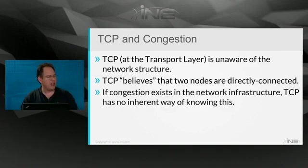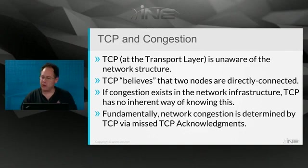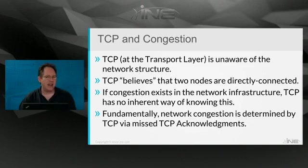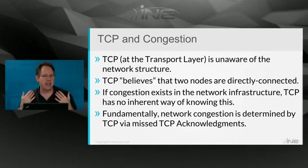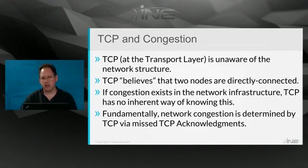If congestion exists in the network, because TCP has no inherent way of knowing this, the only indicator TCP has that there's a problem is based on acknowledgements. If acknowledgements are being delayed or dropped, that's really the only thing TCP is looking for to determine if there's congestion or not.